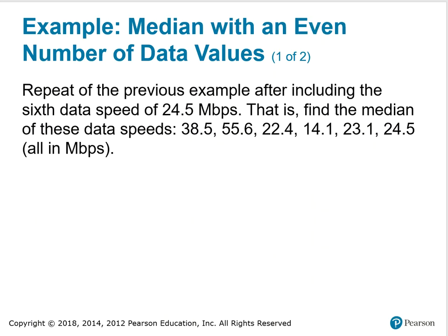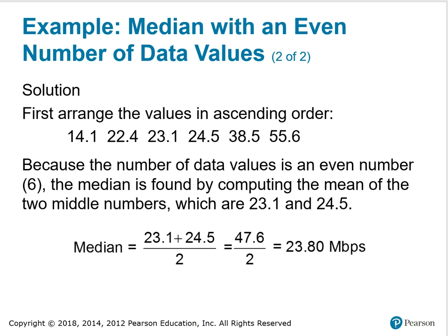If we have an even number of data values, we're still looking for the physical middle, but we have a calculation to perform. So we order the data from smallest to biggest or biggest to smallest, and then we look for the physical middle. Well, if I do the same thing I just did and I number these one, two, three, four, five, six, notice the middle, the physical middle would fall in between those two numbers. Therefore, because the number of data values is an even number, the median is found by computing the mean of the two middle numbers. So I'm looking for halfway between the two middle numbers. In this particular case, the two middle numbers are 23.1 and 24.5. Finding the halfway point or the mean between those, I add the two numbers, divide by two, and this is the median of this set of six data values: 23.80 megabits per second.